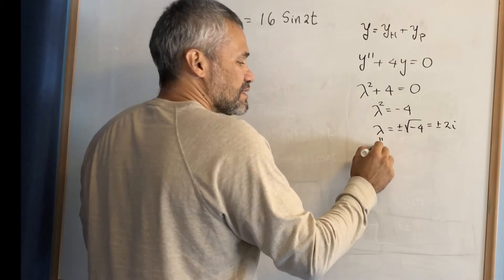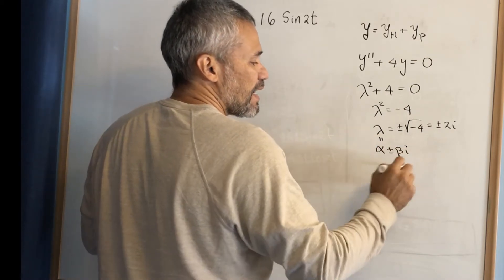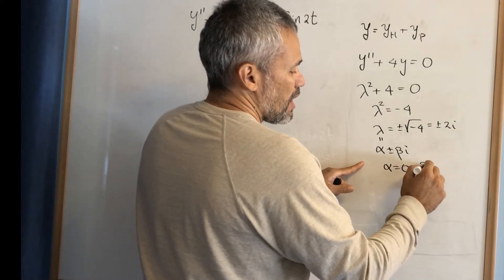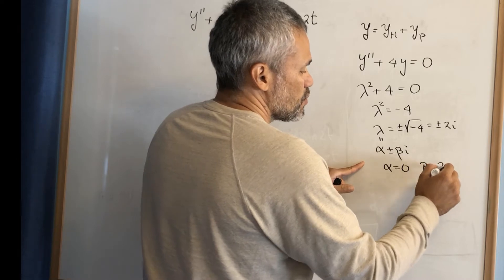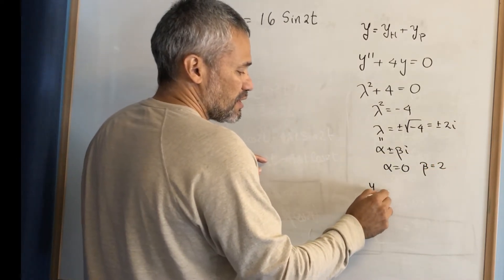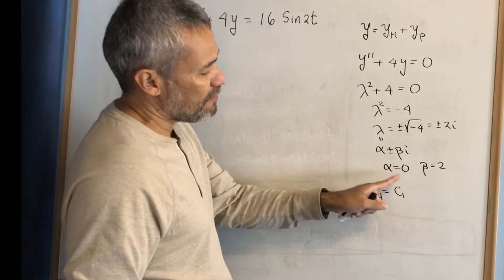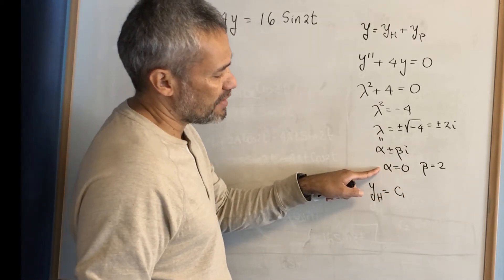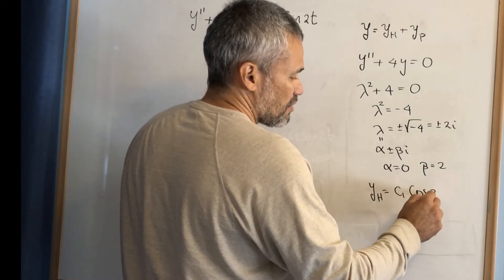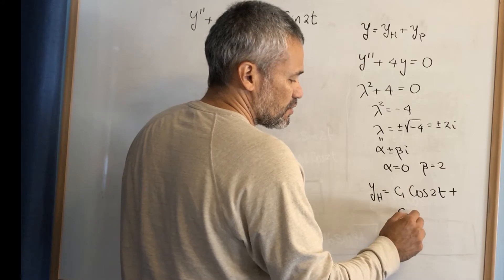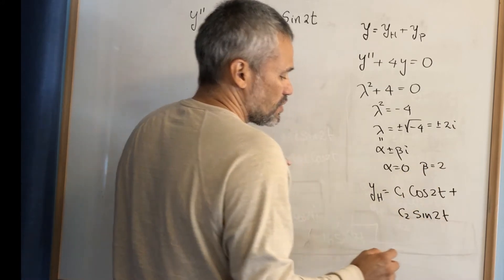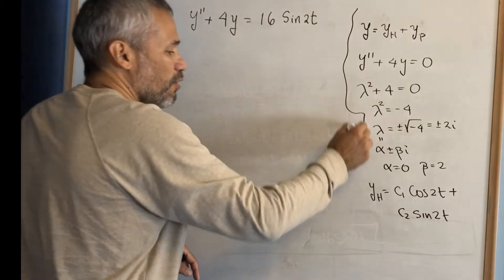When we write this as alpha plus or minus beta i, we get that alpha is 0 and beta is 2. Therefore, the solution of the homogeneous is c1 e to the alpha t — but since alpha is 0 it's just 1 — times cosine of 2t, plus c2 sine of 2t. This is the solution of the homogeneous.